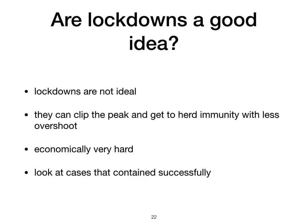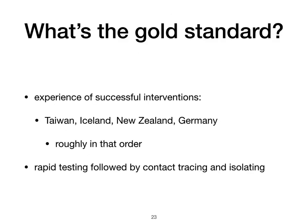So are lockdowns a good idea? Certainly not ideal — they can clip the peak and get to herd immunity with less overshoot, but economically they're very hard. So we need to look at cases that have contained the virus successfully. The gold standard: I'm going to look at four successful interventions — Taiwan, Iceland, New Zealand, and Germany — roughly in that order in terms of success.